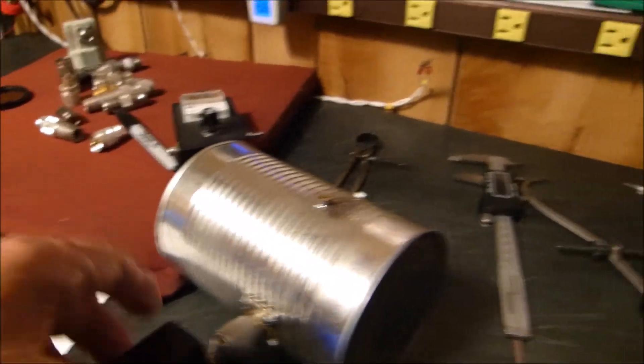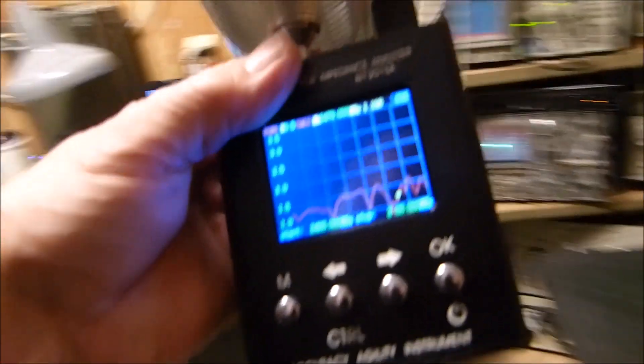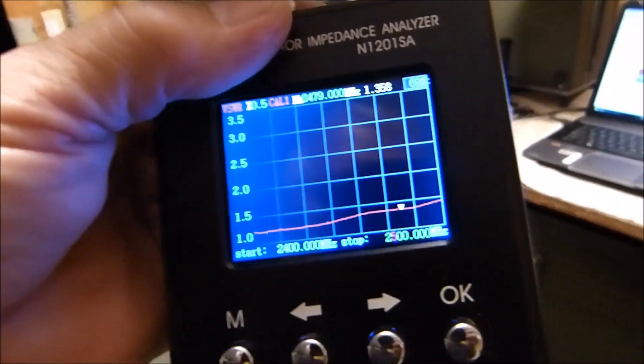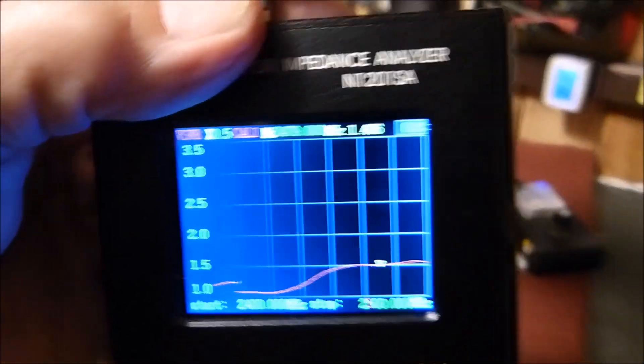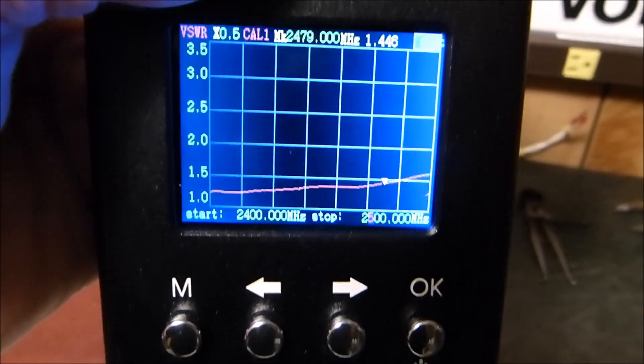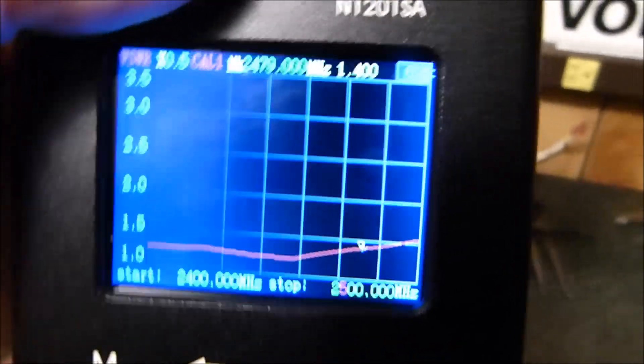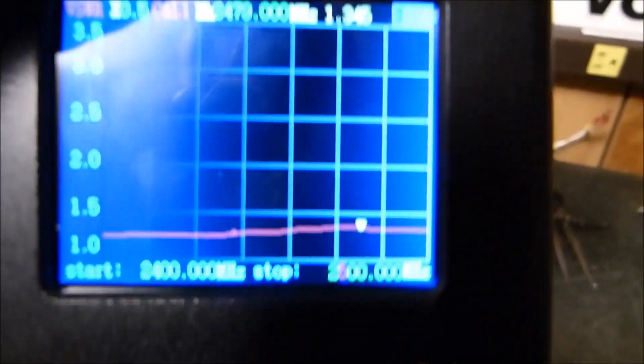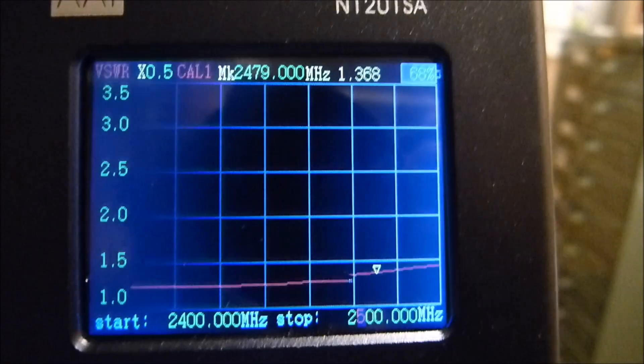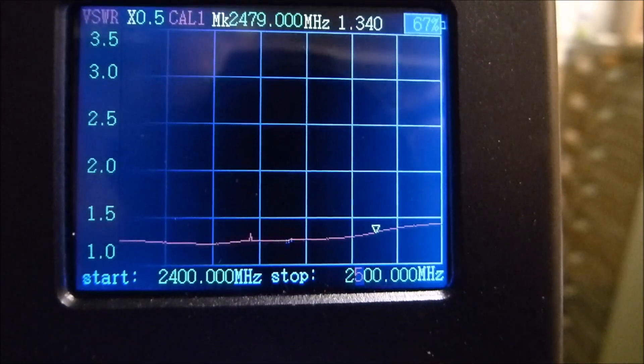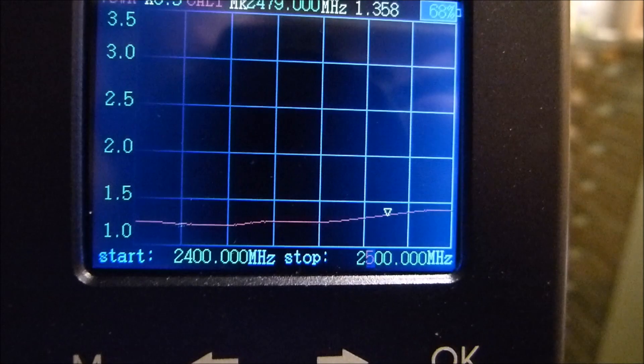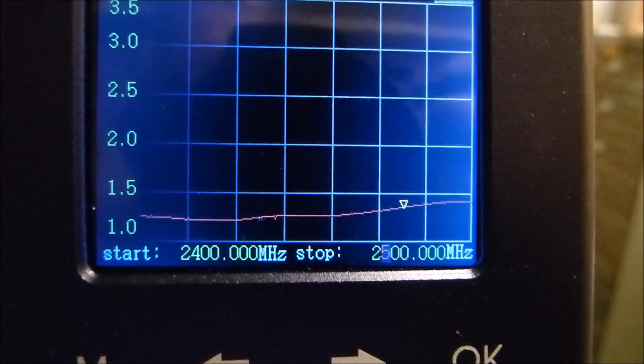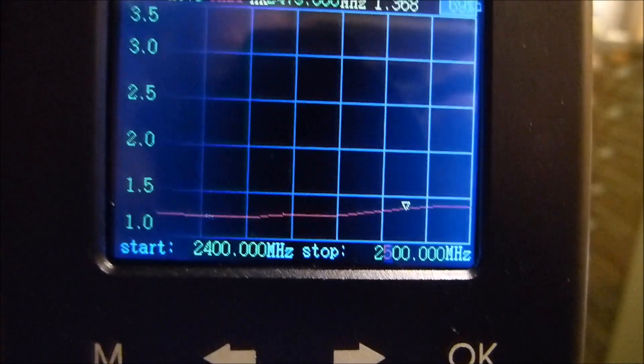But let me show you something else about this thing. Look at the SWR on this thing scanning from 2.4 to 2.5 gigahertz. I should have put my glare filter over there, my polarizing filter. The polarizing filter helps a little bit so I can see. Scanning from 2.4 to 2.5 gigahertz, it's below 1.5 to 1 the whole way.